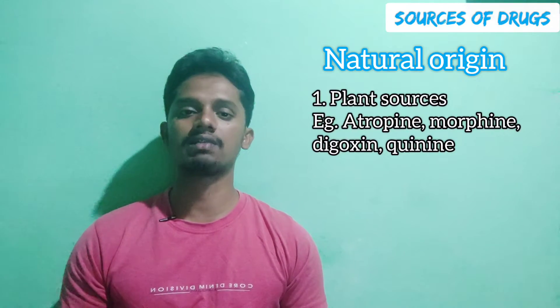Now we will talk about natural origin. Under natural origin, there are many categories: plant, minerals, animals, and human sources. The first category is plant sources.